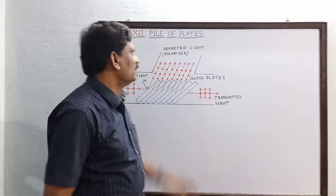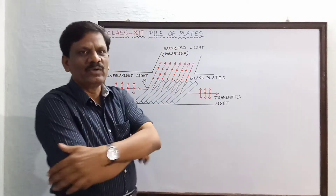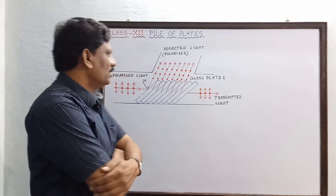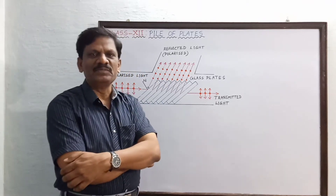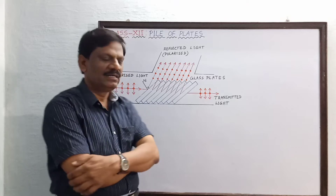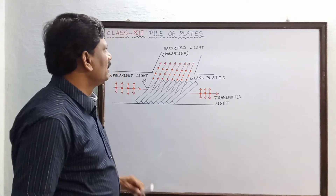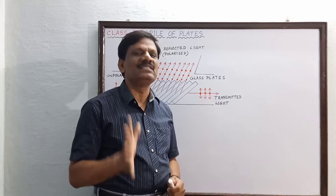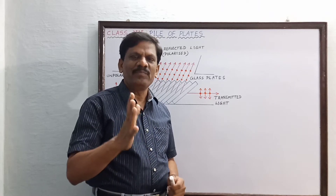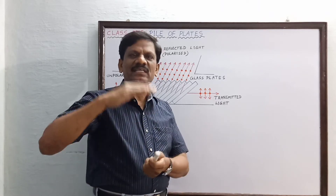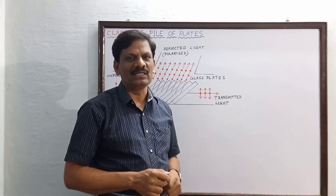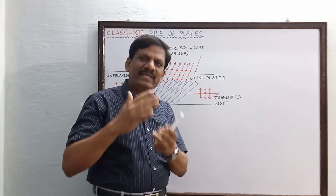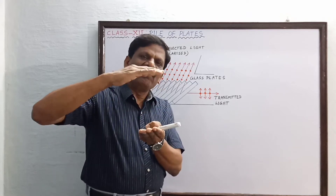Now we are going to explain the working of a pile of plates. You can see the diagrammatic arrangement for the pile of plates. In the examination, when you write this answer, first you should mention what it is. Piling means arranging something one over the other — here we are going to arrange a pile of glass plates.